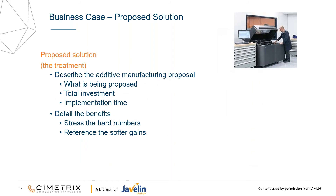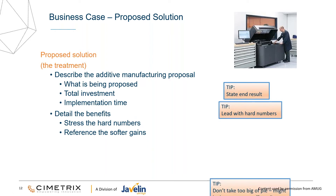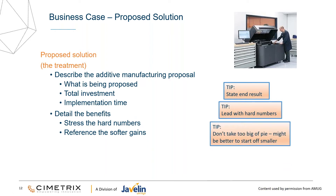As you're talking about the proposed solution: what are you proposing, what's the investment, how long do you think it's going to take? Detail those benefits — stress the hard numbers and reference those softer gains. What I mean is: if you've got numbers and data that you can back up, include that in your presentation. You're better to do that than reference softer gains like getting to market faster, which can be hard to quantify. If that's a value in your company, use it — but some of those things are very hard to put a dollar value against. Want to lead with those hard numbers, and don't take too big a piece of the pie. Start off small and work your way up — narrow in on a couple key aspects, do that part well, and the other stuff will follow.